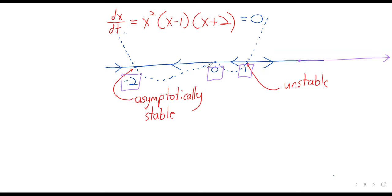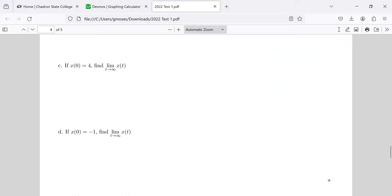If x of zero is negative one. So we're starting here. And then the arrow is pointing to the left. And we never jump over fixed points. So we go to negative two and stop. And the limit as x approaches infinity is negative two. It was x of zero equals negative one.